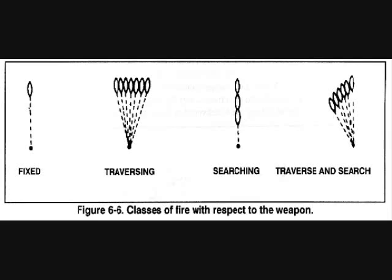C5 — free gun fire. Free gun fire is fire delivered against targets requiring rapid changes in direction and elevation that cannot be applied with the T&E mechanism. To deliver this type of fire, the gunner removes the T&E mechanism from the traversing bar on the tripod, allowing the weapon to be moved freely in any direction.